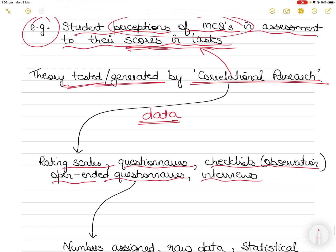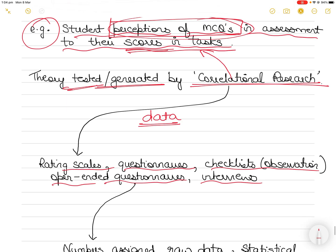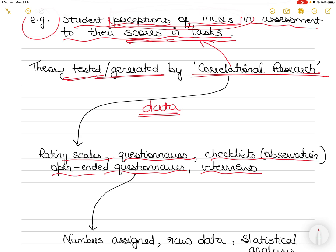Instruments include fixed choice observation checklists, rating scales, standardized questionnaires. The use of fixed choice instruments is possible because the dimensions or characteristics of the phenomena are thought to be known. So you have already defined what you mean by perceptions of multiple choice questions. Once you have already defined them, that is where your descriptive theory is generated. Then you use the description in the questionnaire with a rating scale and give it to the students.